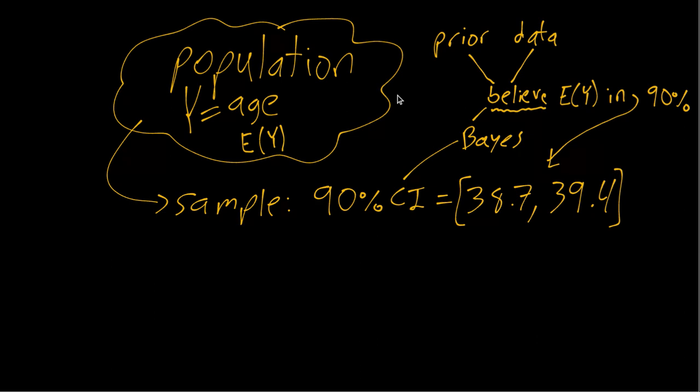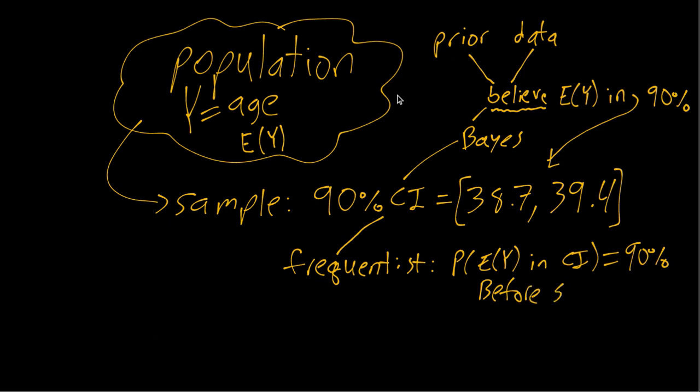In contrast, if we think about a frequentist confidence interval, that means from the before sampling perspective, so if I back up to before I took the sample, I would say I'm constructing this interval using a procedure such that before sampling, there's a 90% probability of the true mean being inside the interval. So the probability that the true mean is in my confidence interval is 90% from this before sampling perspective.